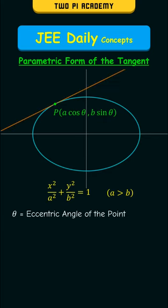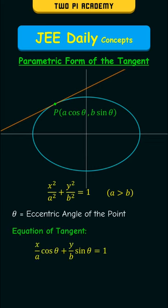And if you draw a tangent to the ellipse at this point, the equation of the tangent will be given by x by a into cos theta plus y by b into sin theta is equal to 1.